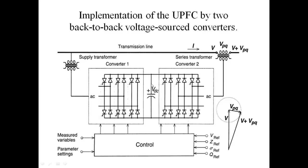First, I will explore the components in this diagram. This is the Transmission Line diagram. This is the transmission line. This current I is the current flowing in the transmission line. This is the voltage single-line diagram — this is voltage V in the transmission line. This VPQ is the injecting voltage — this Series Compensator injecting voltage.